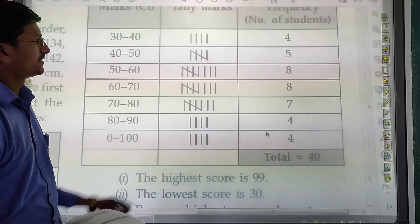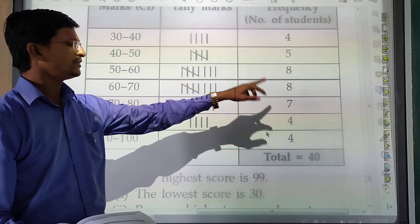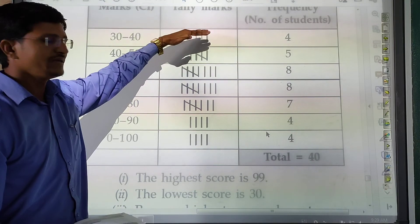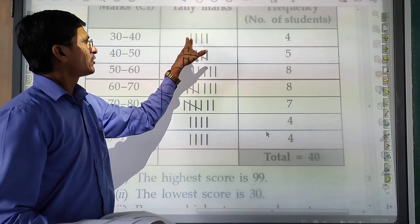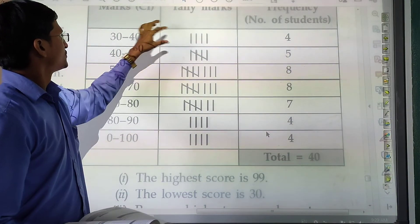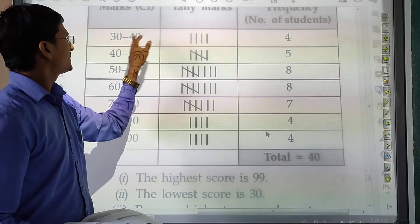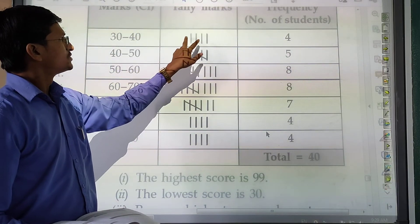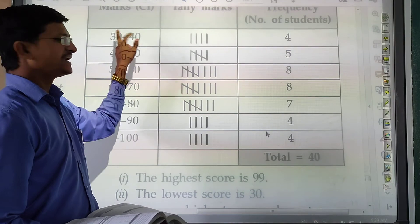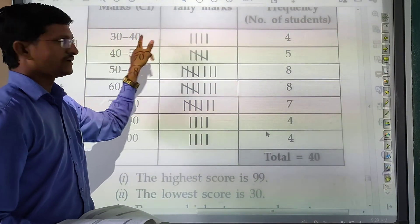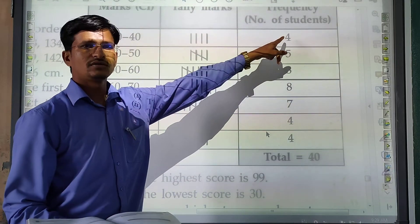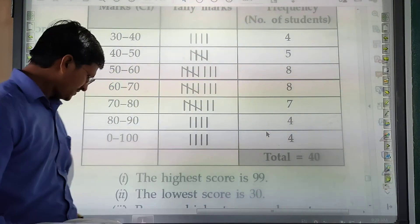All the answers come from reading the frequency table carefully. The tally marking is very important — in the 30–40 interval there are 4 observations marked, so 4 students failed. Like that, we use the table to answer each question.